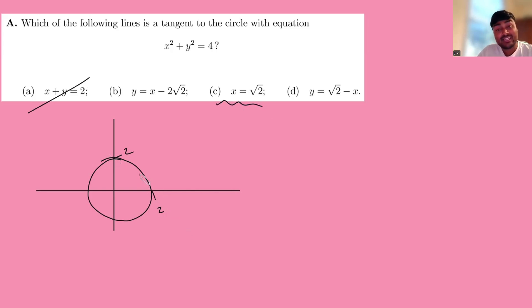We can also look at c here. That's just the vertical line x equals root 2. So root 2 is less than 2. It's maybe there. It's a vertical line like that. That's clearly not a tangent.